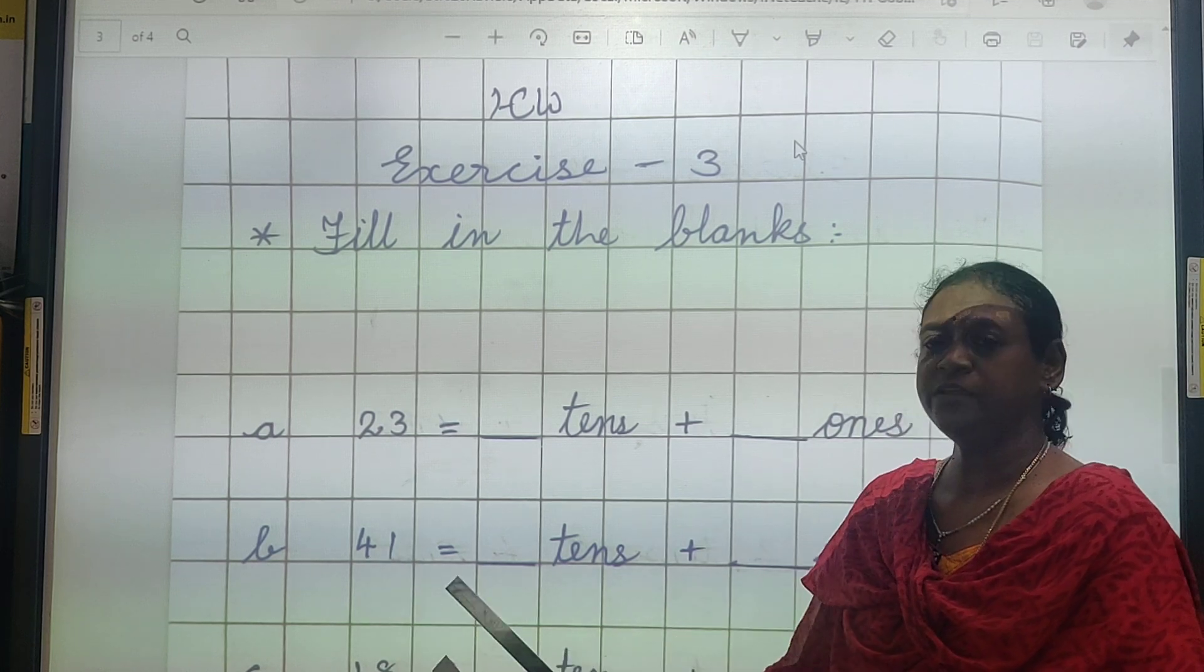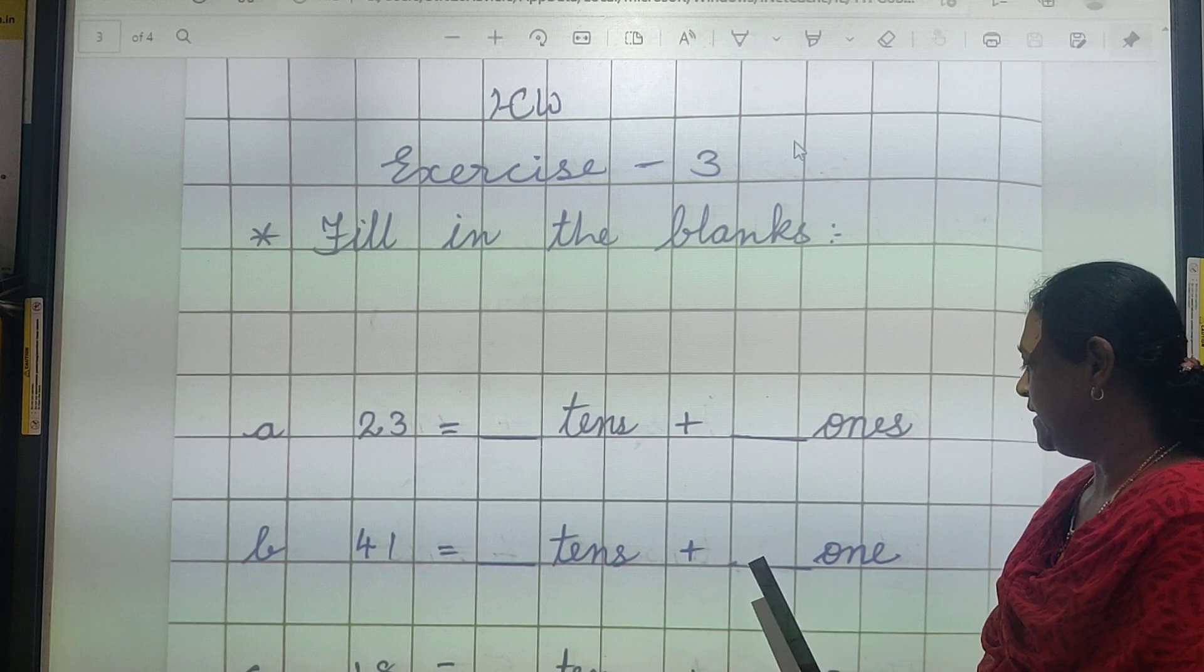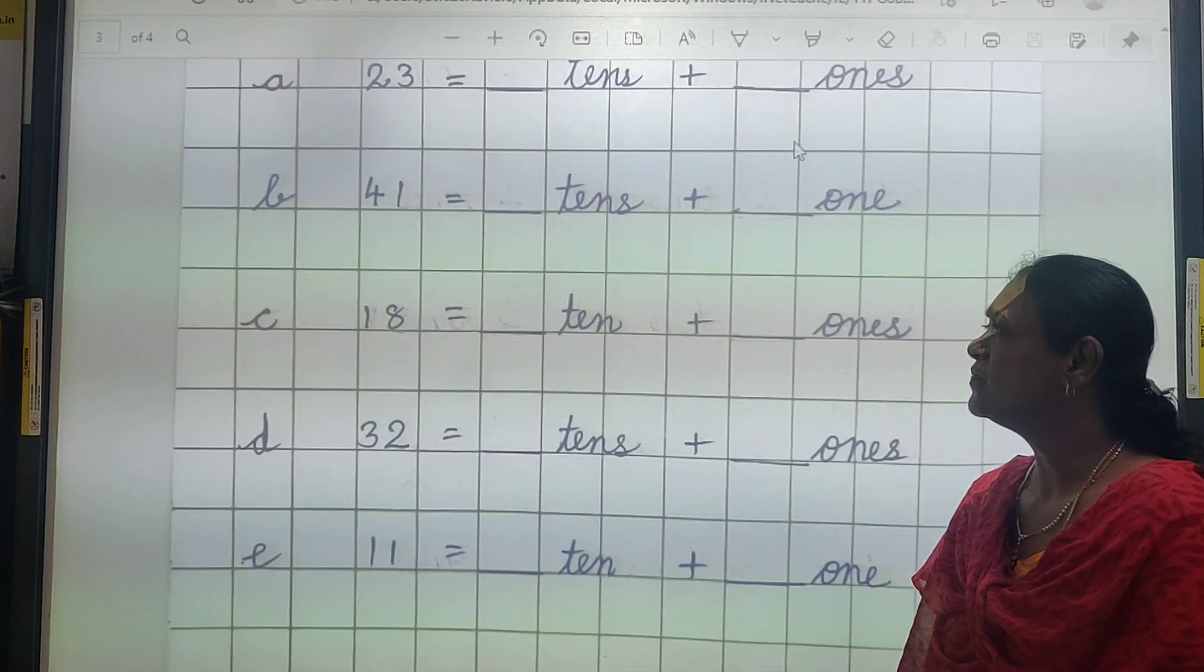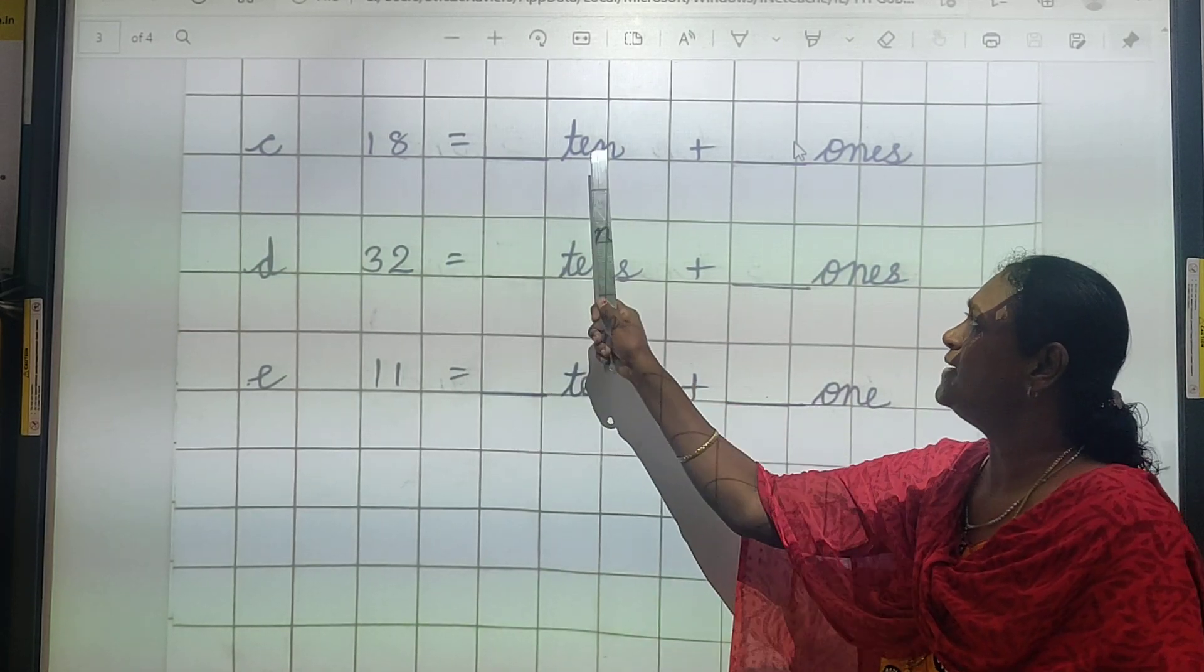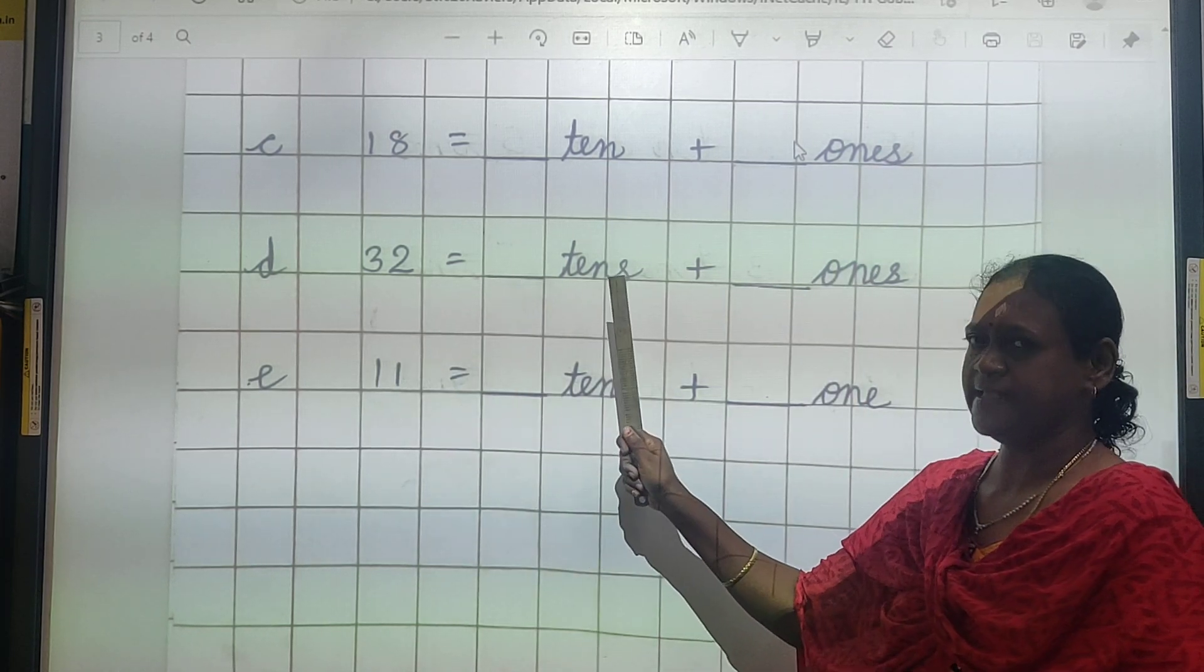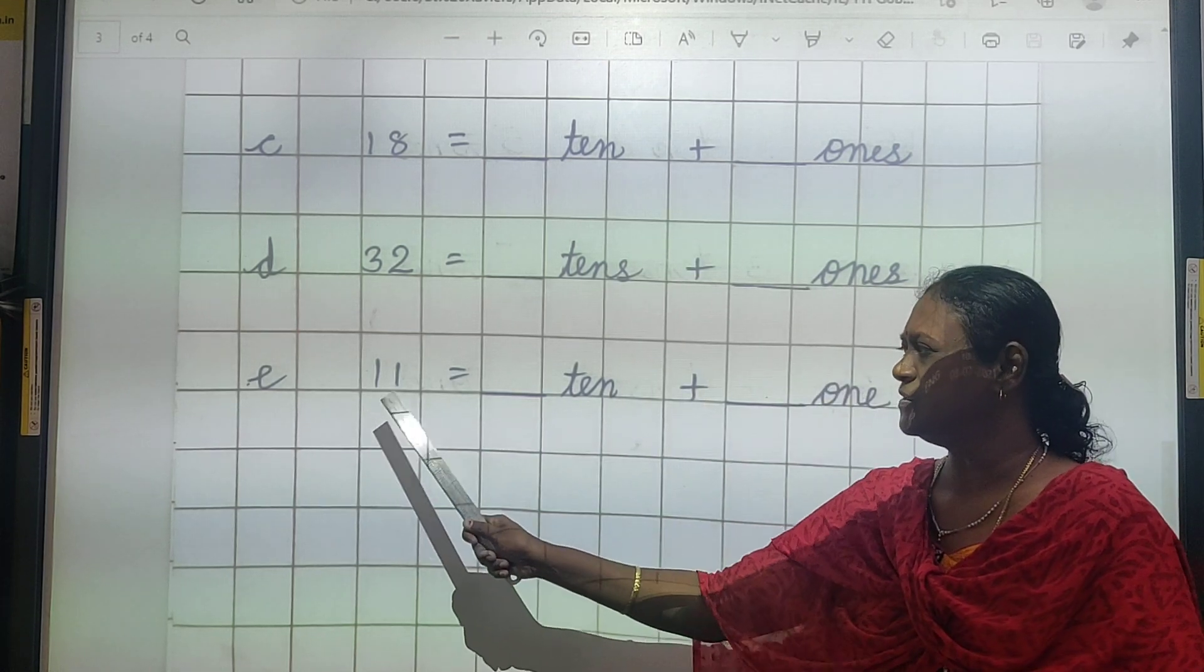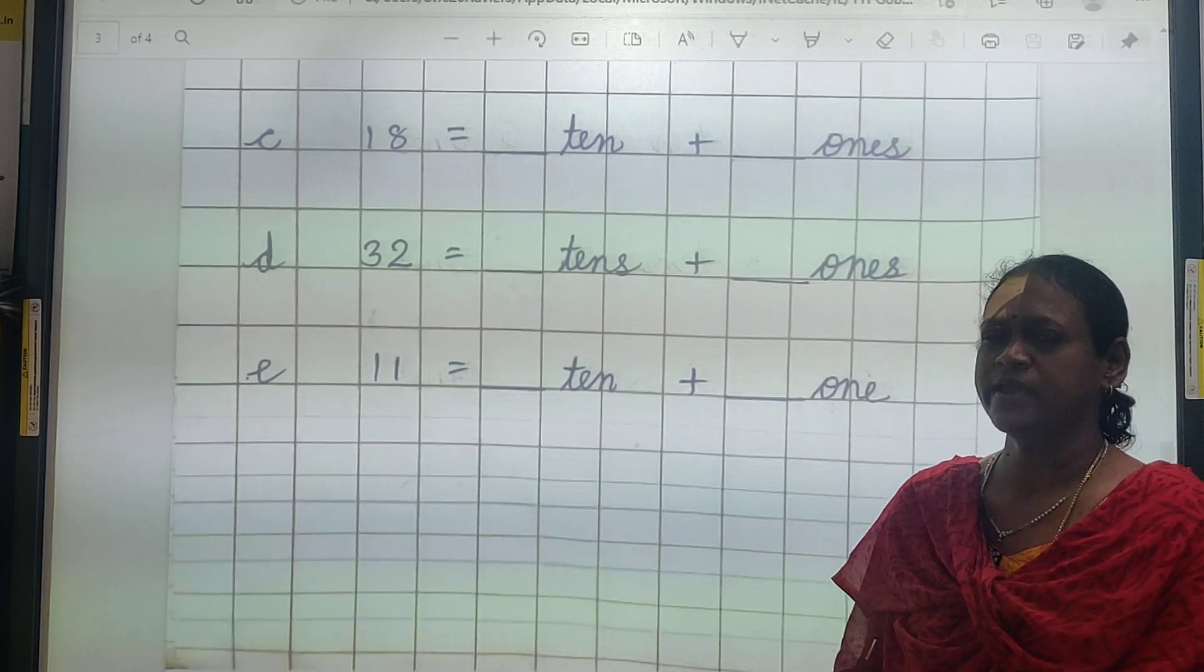Now this is 18. 18 means 1 ten plus 8 ones. 32, 3 tens plus 2 ones. Now this is 11, so 1 ten plus 1 one. Okay.